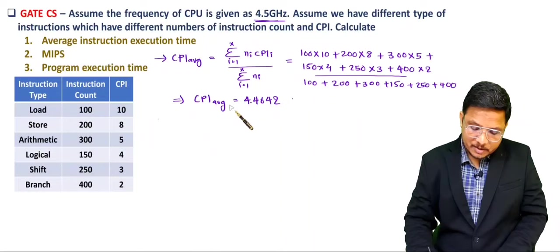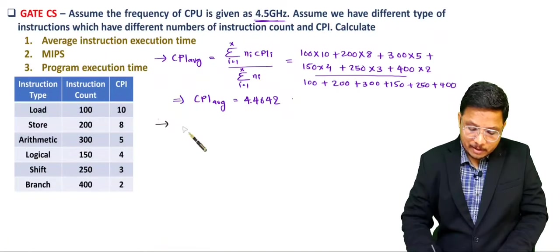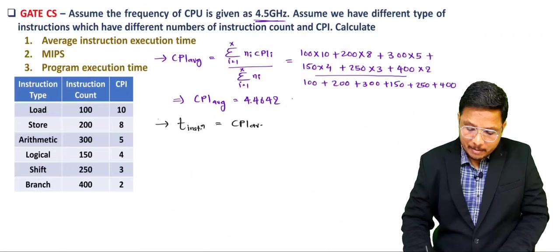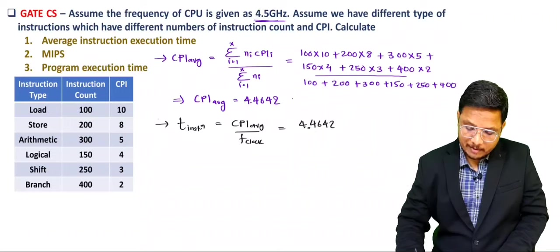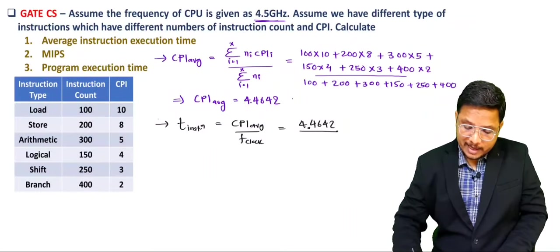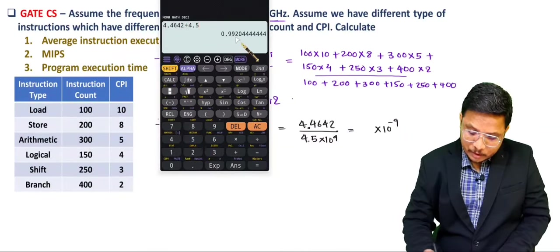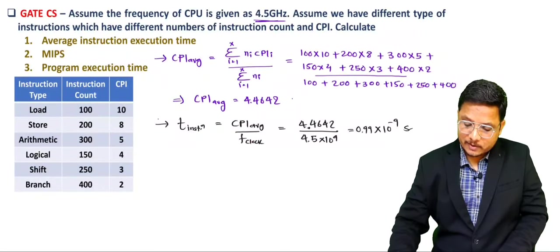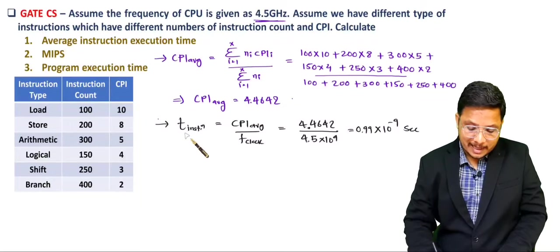Once we have average CPI, we can calculate many other things. Average instruction execution time — the average time for one instruction — equals average CPI divided by clock frequency. So: 4.4642 / (4.5 × 10⁹) = 0.9920 × 10⁻⁹ seconds, approximately 0.99 nanoseconds per instruction.